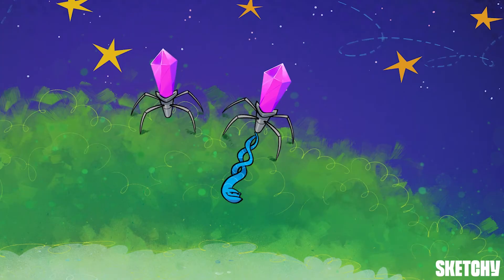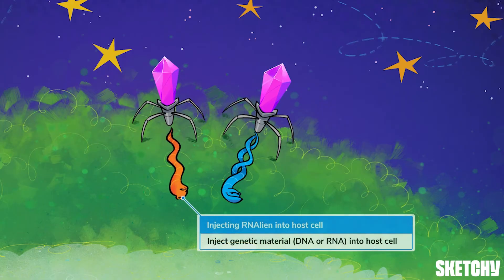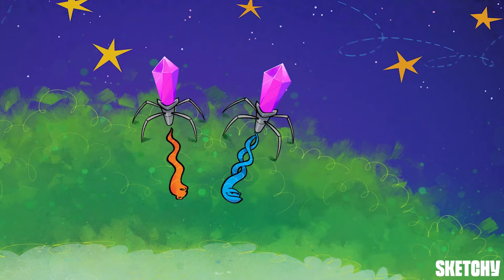While this particular invader happens to be a DNA alien worm, keep in mind that the genetic material of bacteriophages can be DNA or RNA — which explains why this orange RNA alien worm is being injected by a second ship. With its genetic material inside the cell, the phage can undergo the remaining steps of either the lytic or lysogenic cycle. A number of factors, including the habitability of the host cell, dictate which cycle occurs.